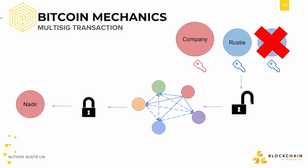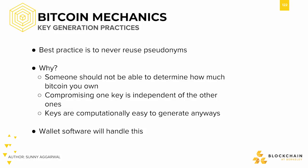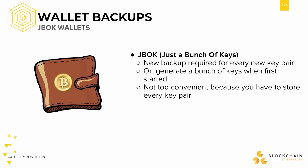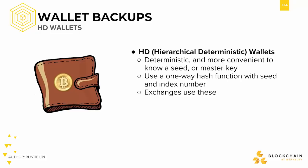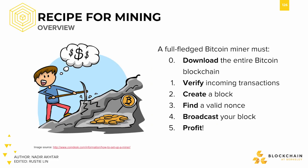We went over some best practices, such as never reusing your pseudonyms. But the problem comes when storing all of these keys. One way is to use the JBOC, or just a bunch of keys, style of wallet. However, this is expensive because you have to store every key pair. On the other hand, you could use hierarchical deterministic wallets, or HD wallets, which are much better for storing large amounts of keys due to their recursive structure.